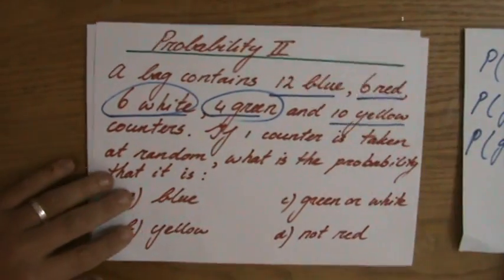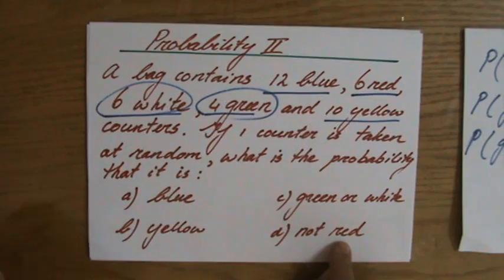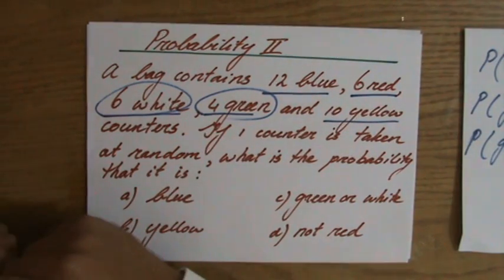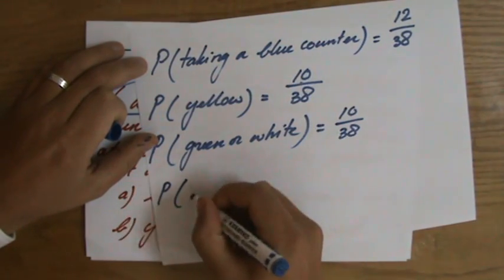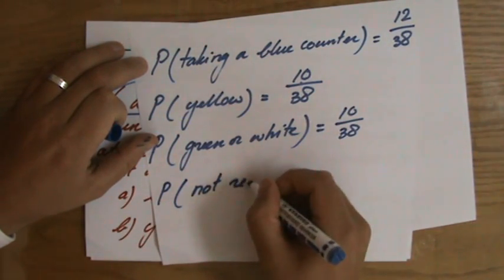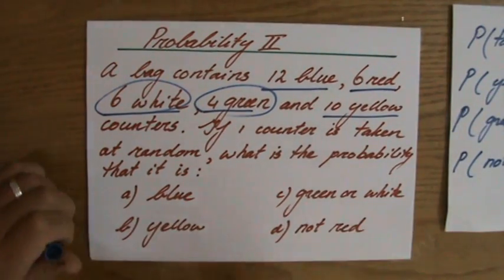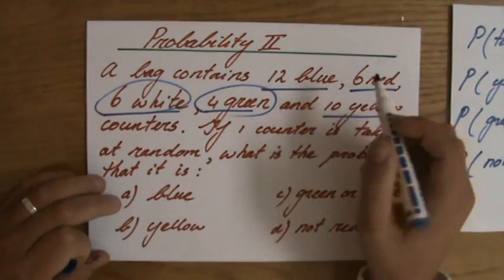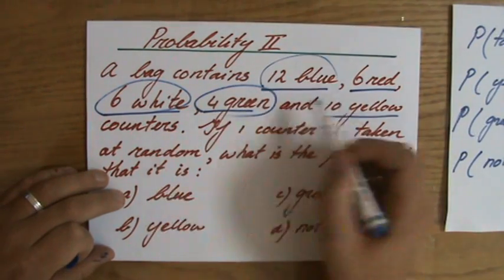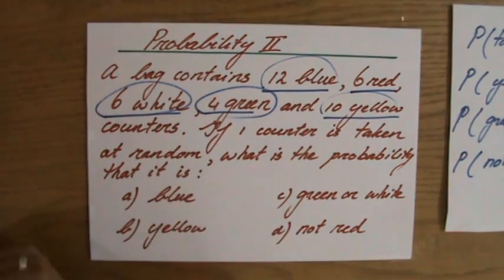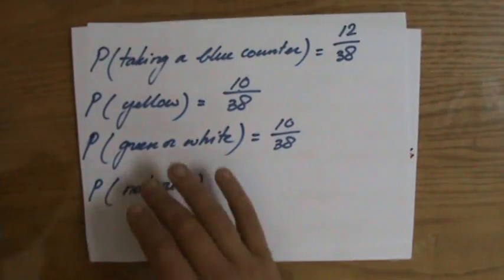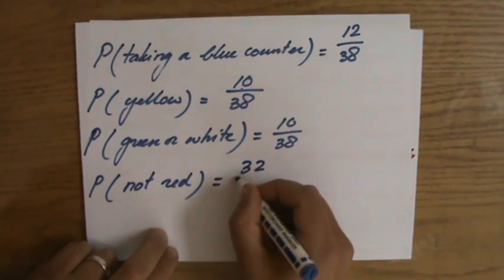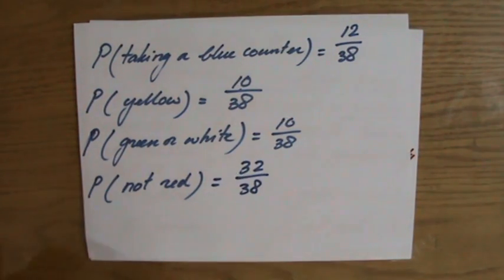Let's continue. Last question: not a red counter. Now there are two ways of doing this. Not a red counter. So the probability of not red. Two ways. First of all, you could say well not red, that means it can be blue, yellow, green and white. So how many successes do I have? I have 10, 20, 32 successes. So I have 32 out of 38. That's the correct answer.